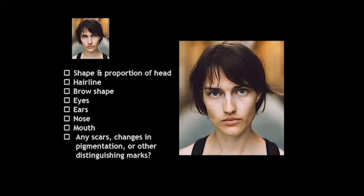First, we want to look at the general shape and proportion of the head. How tall is the head going from the hairline to the chin down the center of the face? Then, how wide is the face at the widest part, which is usually what we refer to as the cheekbone? You may also notice that the shape of this woman's face is rather angular and sharp — her jawbone comes down at a sharp angle and her cheekbones are very prominent. With the overall structure identified, we can more easily see the placement and proportion of the other features.